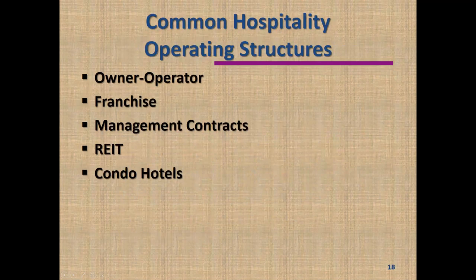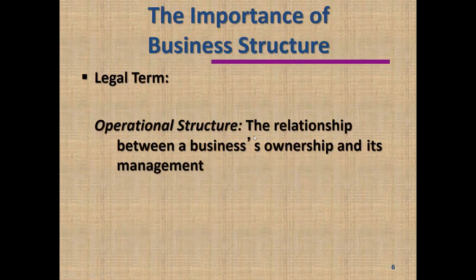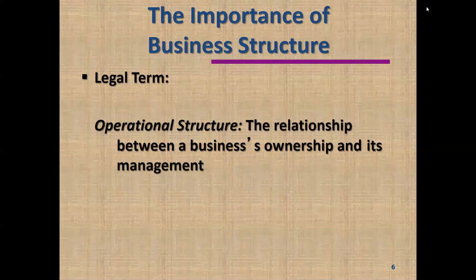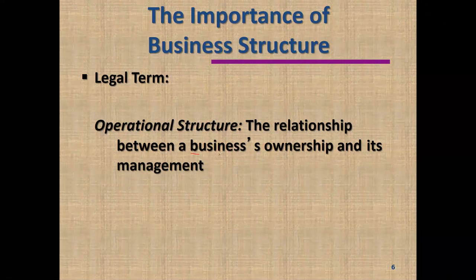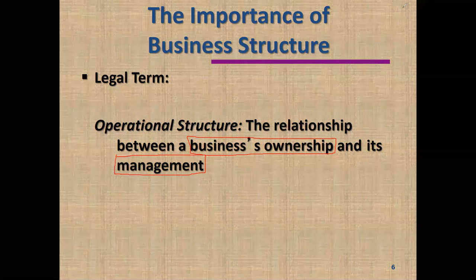We are now ready to talk about the second topic in this chapter, and that is operating structure. So we're moving from organizational structures to operating structures, and we've got five categories to talk about today. The definition of operating structures is the relationship between a business's ownership and its management.